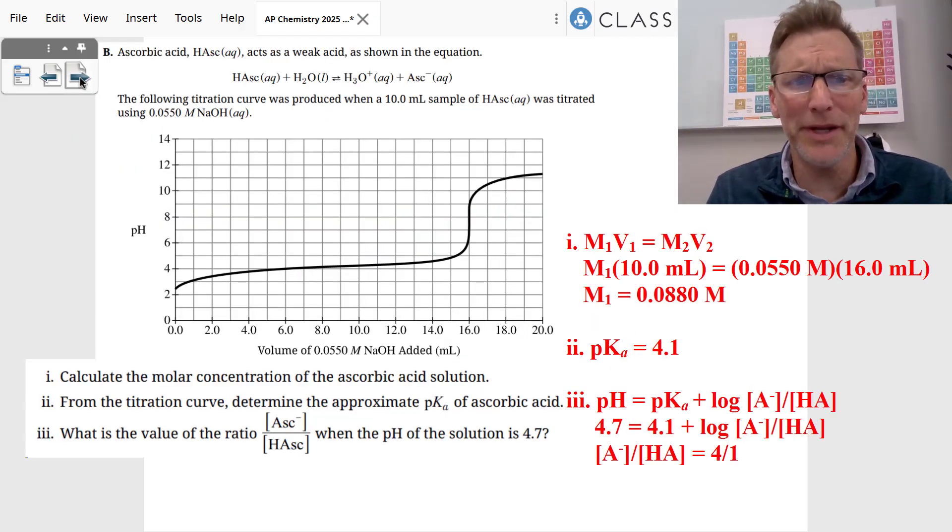Let's go to problem number B. Problem number B gives us a titration curve for this ascorbic acid, and the first one is to find the molar concentration using the titration curve. So what are we going to do? M1V1 equals M2V2. We know we were titrating with 0.0550 molar of sodium hydroxide. We've used 16 milliliters of it to get to the equivalence point. We divide by 10 milliliters of the acid, and that gives us a molar concentration of 0.0880 molar of the ascorbic acid.